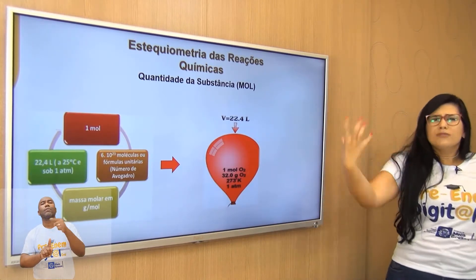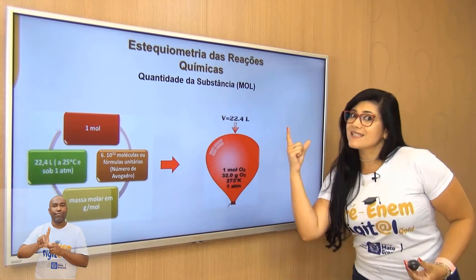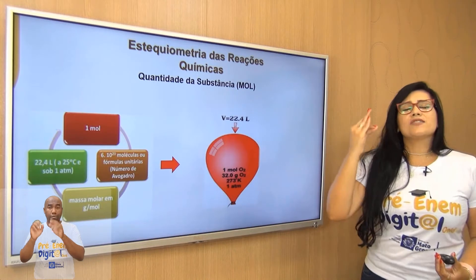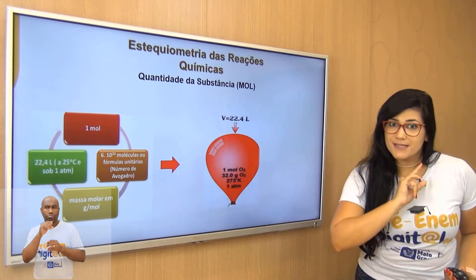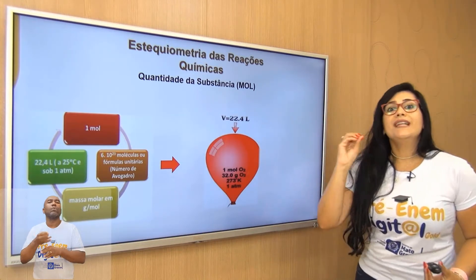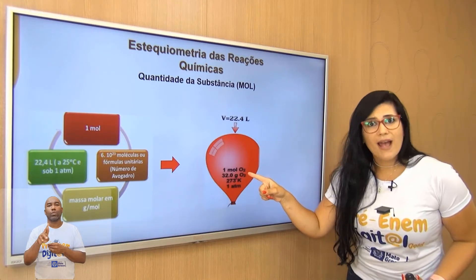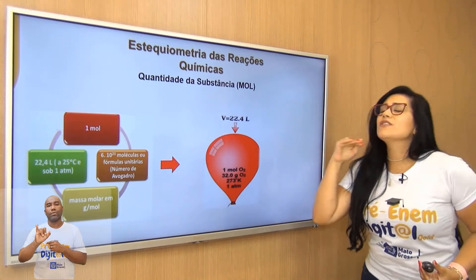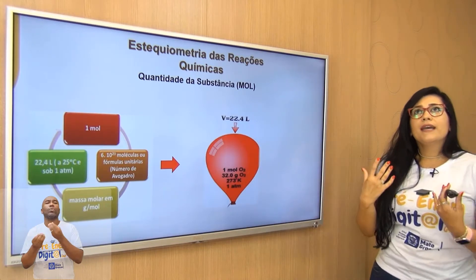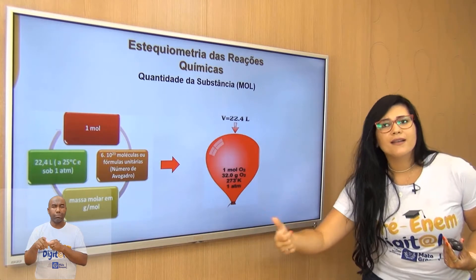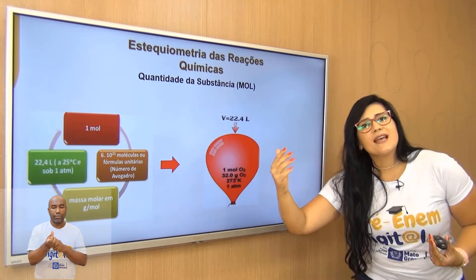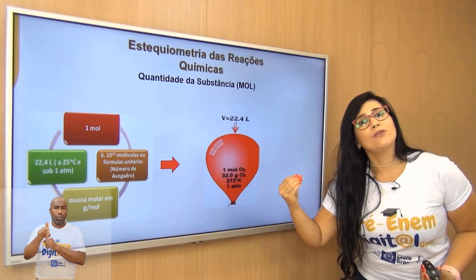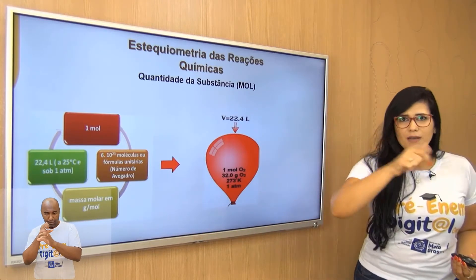E se eu for pensar em volume: um mol de qualquer gás, nas condições normais de temperatura e pressão (CNTP), tem 22,4 litros. Como O₂ é um gás, ele vai ter 22,4 litros em um mol. Então, para um mol de qualquer substância: em massa, a massa molar; em quantidade, 6,02 × 10²³; e em volume, para gases, um mol equivale a 22,4 litros nas CNTPs.